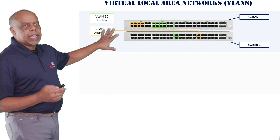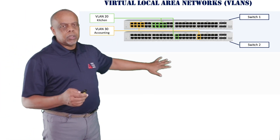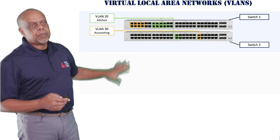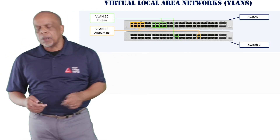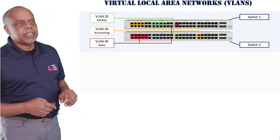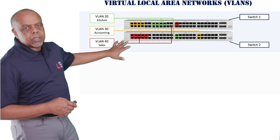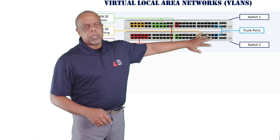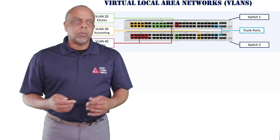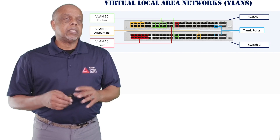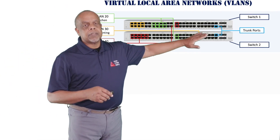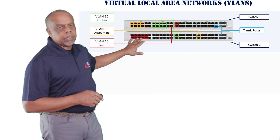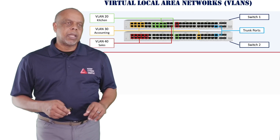Now we're going to pick a port off of each switch to be the trunk ports. We'll actually walk through this in Packet Tracer to set these up. These trunk ports will connect the two switches together so that frames from one switch will travel through the trunk ports to the other, allowing those VLANs to share information. So what does that look like from an architecture perspective?